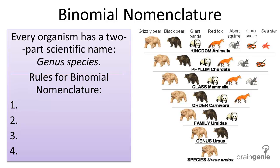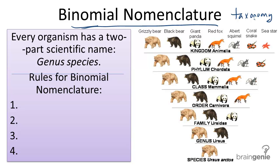Binomial nomenclature is a two-part naming system based on the taxonomic levels that Linnaeus outlined in the branch of science called Taxonomy. He decided to use the two most specific levels, or taxa, to name organisms. And this system followed some simple rules.